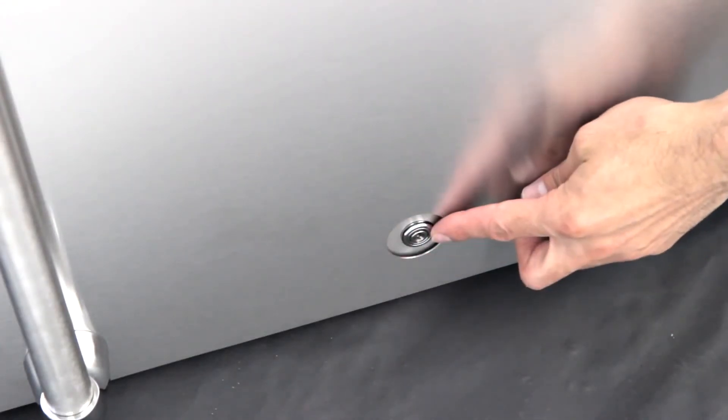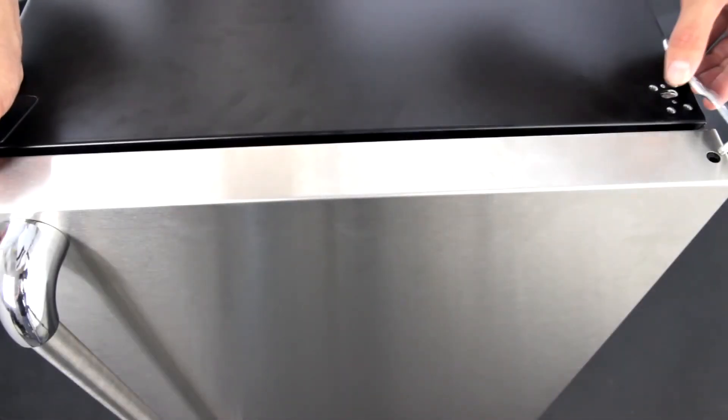Now put the door back on by setting it on the bottom hinge and replacing the top hinge we previously removed.